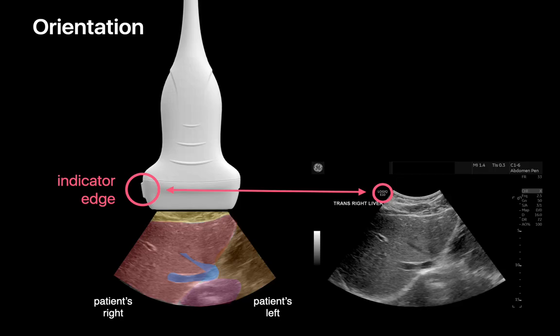By convention, we hold a probe so that the probe's indicator edge is in the same orientation as the indicator mark on the displayed image, so that the displayed image always is in the same orientation as the patient's anatomy in real life.